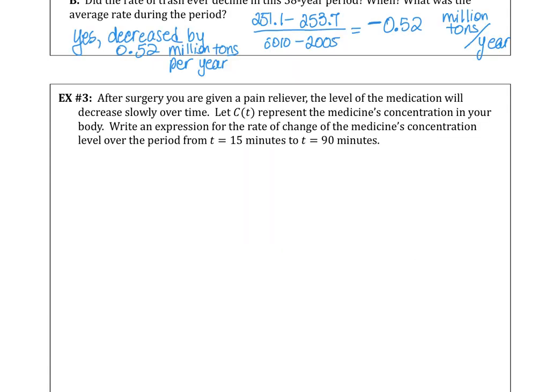An important skill set in our course is going to be able to read some verbal description and then to rewrite that verbal description in an algebraic representation. If you have surgery and you take a pain reliever, the level of medication will decrease slowly over time. Let's say we call capital C of t the function to represent the medicine's concentration in your body. You want to write an expression for the rate of change of the medicine's concentration level over the period from 15 minutes to 90 minutes. Can you try that on your own?